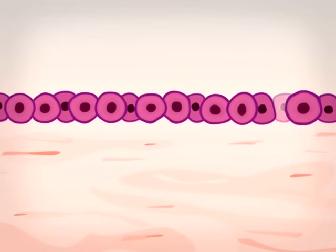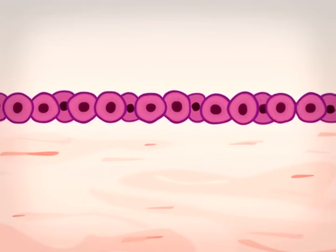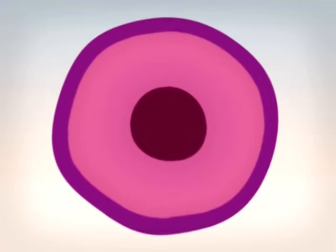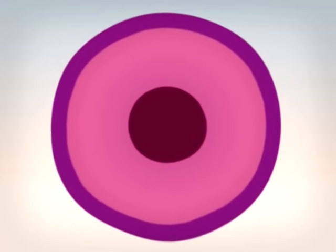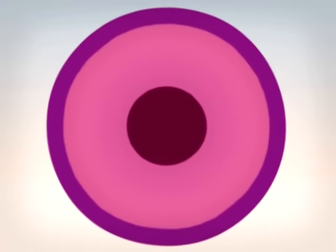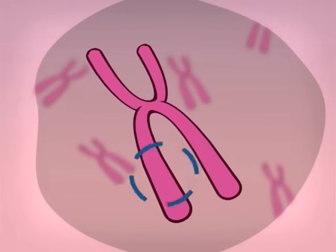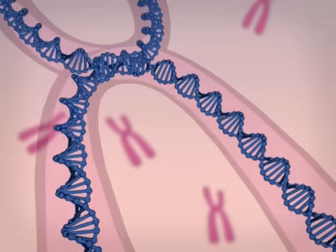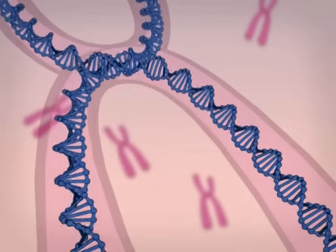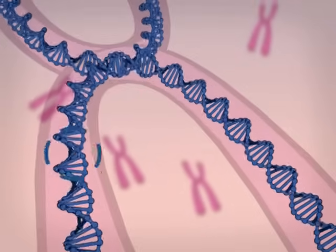Every cell is therefore programmed to multiply and die. This ordered but complex program is controlled by the center of the cell — the nucleus — which contains chromosomes containing many genes made up of DNA.